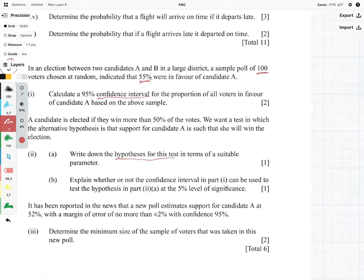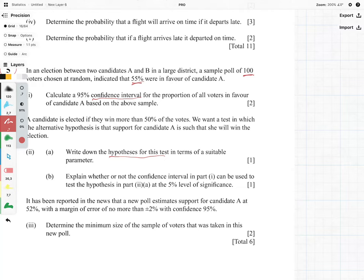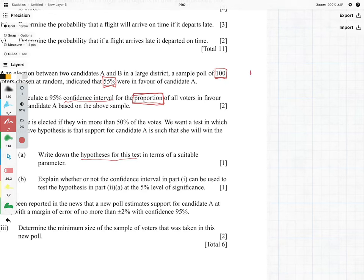Now this is quite an easy question and why it's easy is because of the words that they're using. They're telling us we need to calculate the proportion. We've been given a percentage and we've been given the sample size, so we have N and we have P. It's between two candidates A and B, so in a sense we are looking at a binomial distribution.